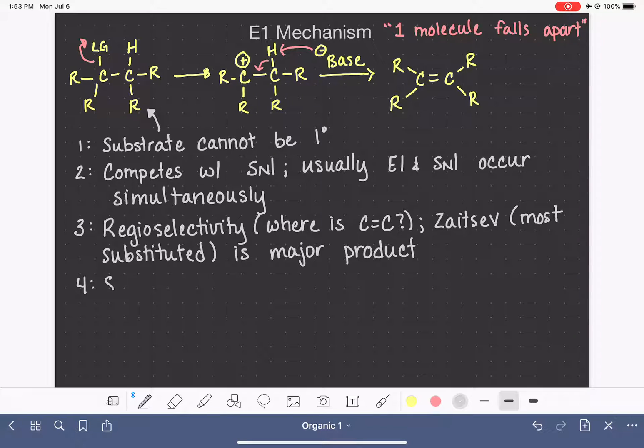Stereoselectivity, which is a fancy way of saying if, or asking if the product will be cis or trans. Stereoselectivity is exactly the same as E2, meaning that the trans is the major product because it is more stable.